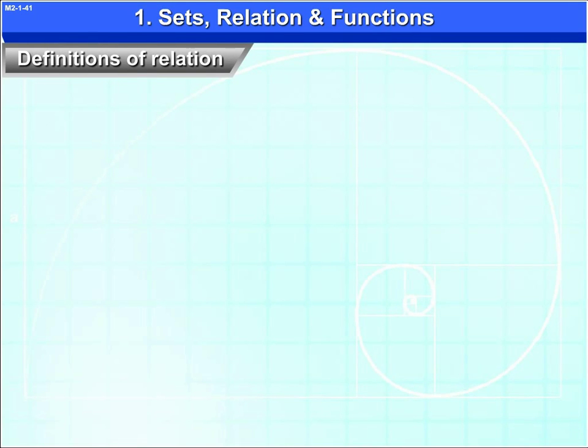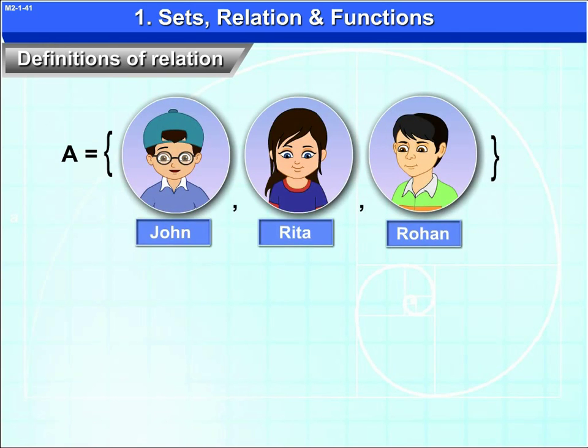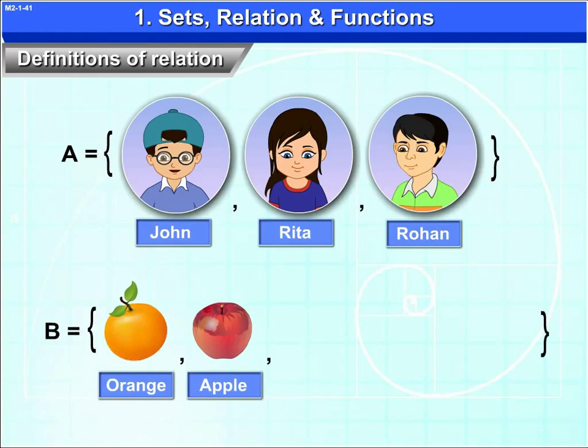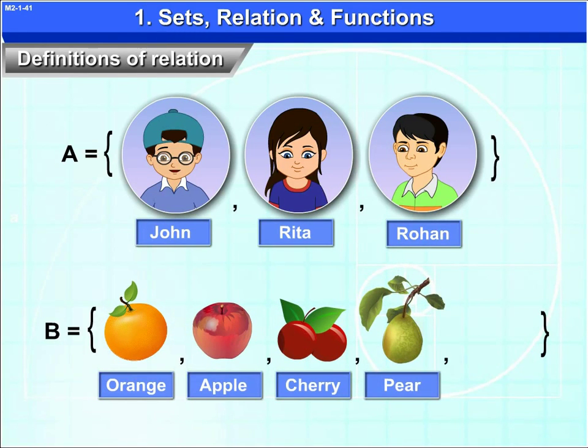For example, let A be the set containing John, Rita, Rohan. B be the set containing orange, apple, cherry, pear, banana.